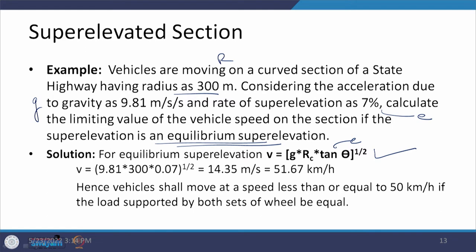When comparing flat conditions versus super elevated conditions for both skidding and overturning, the values of V change. You can try a single example and see how the value of V differs across all four conditions. I leave that to you to try at home and find out those changes.